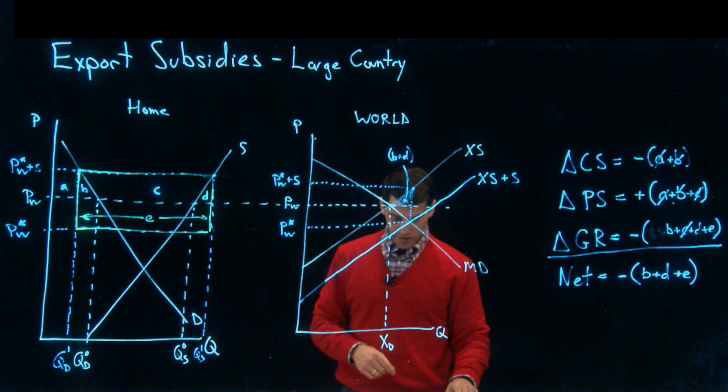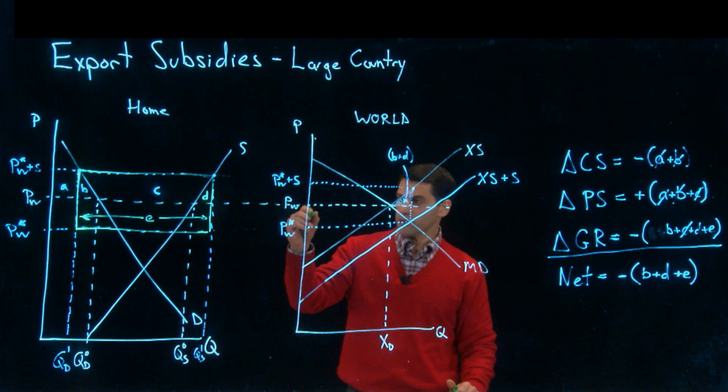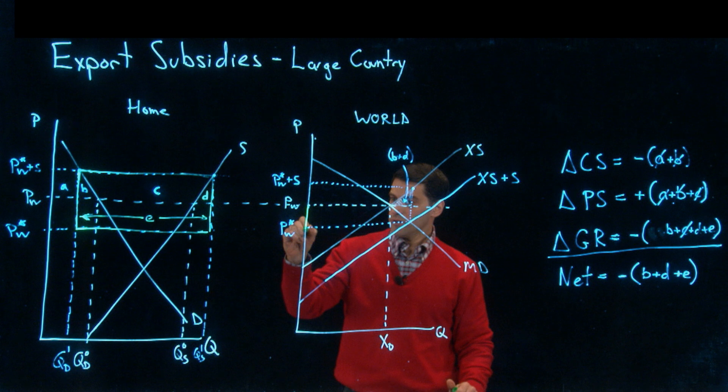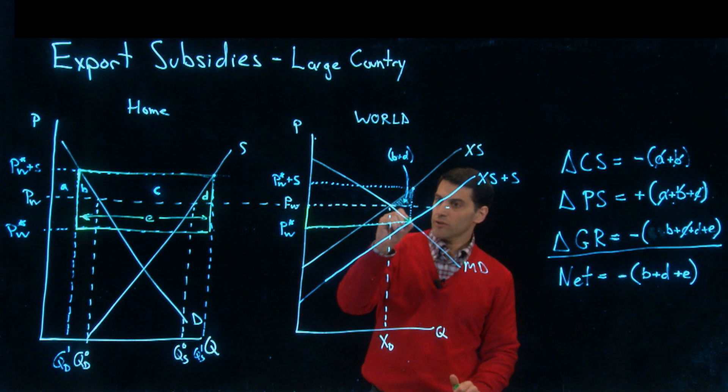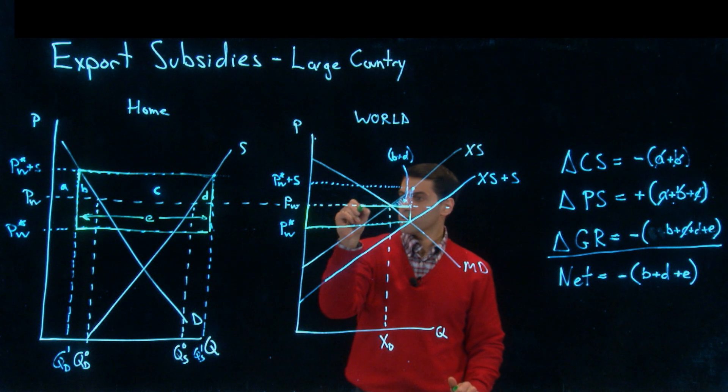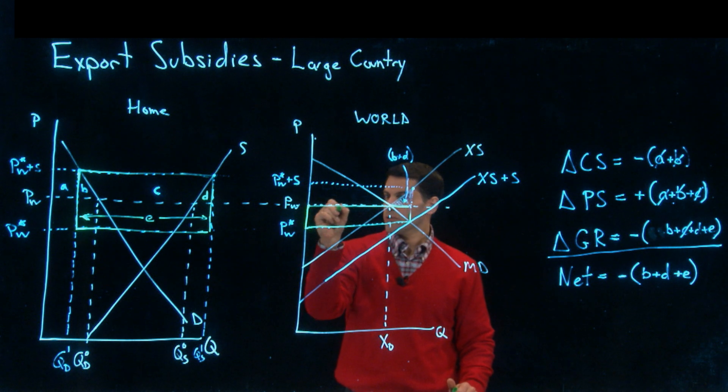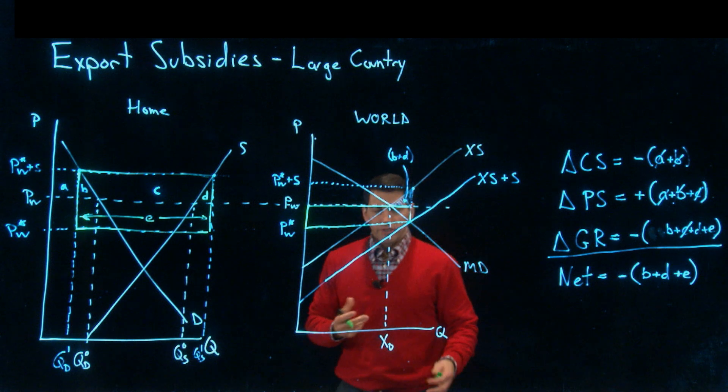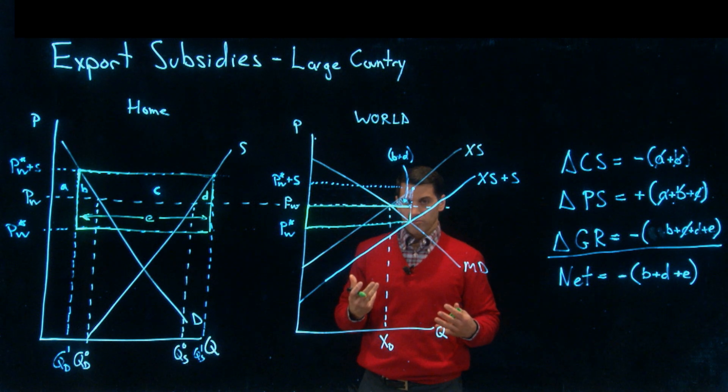E is all of this, and in this graph it's this rectangle down here.